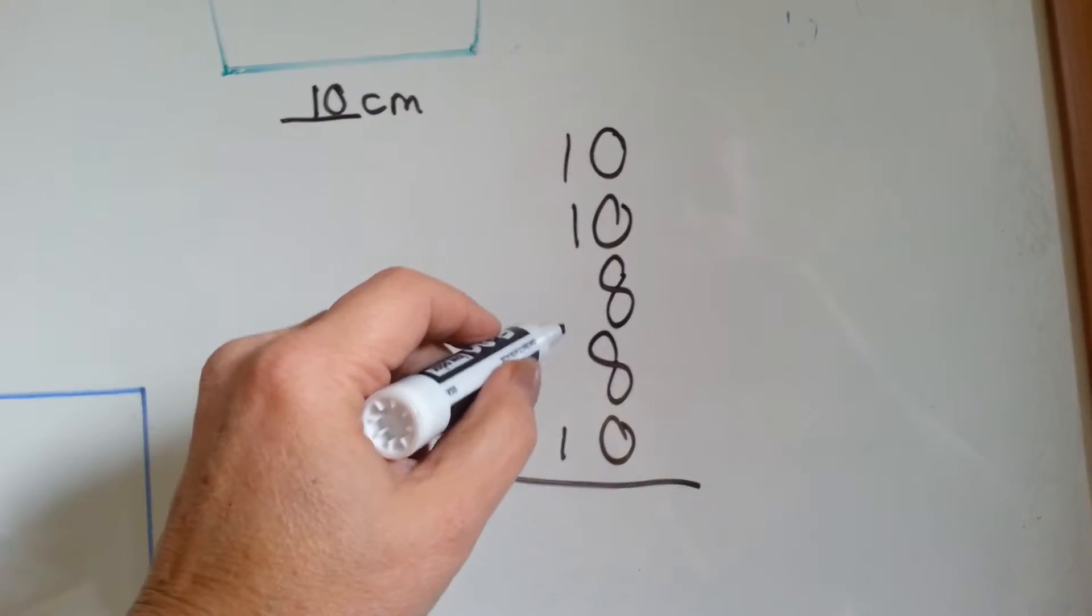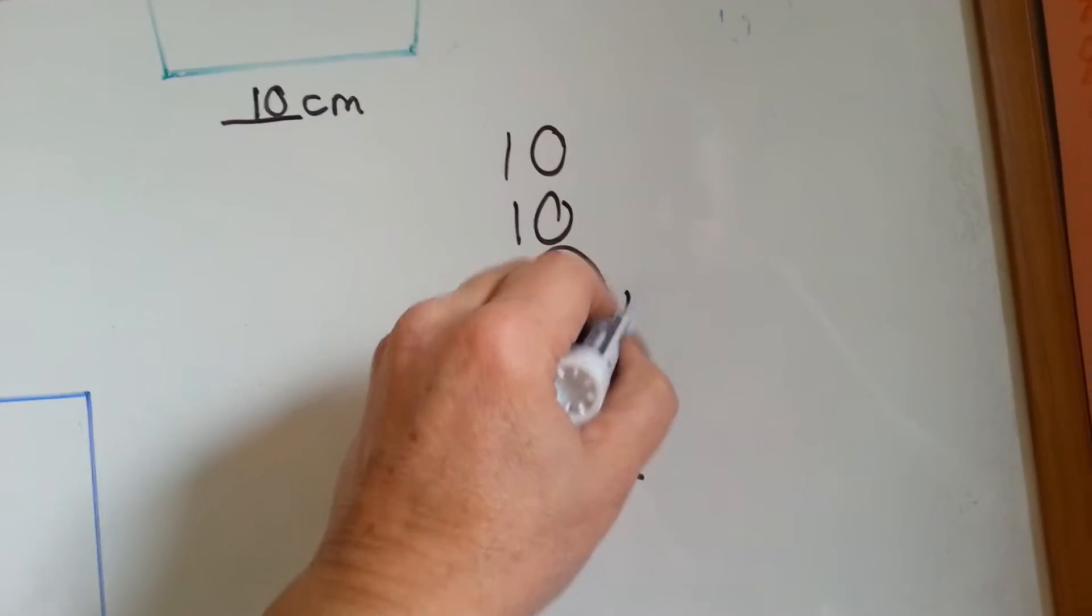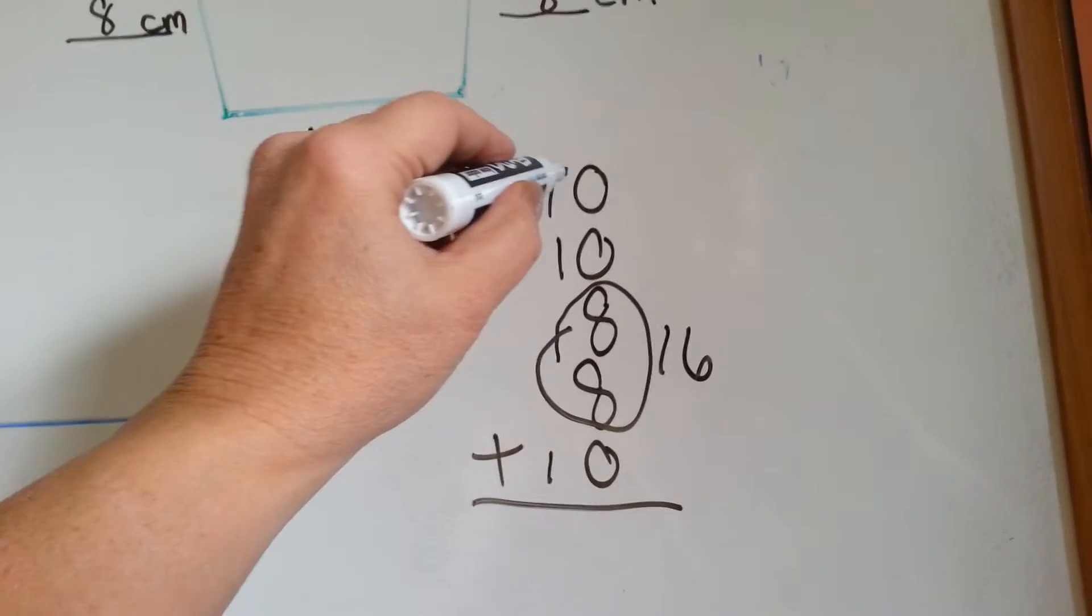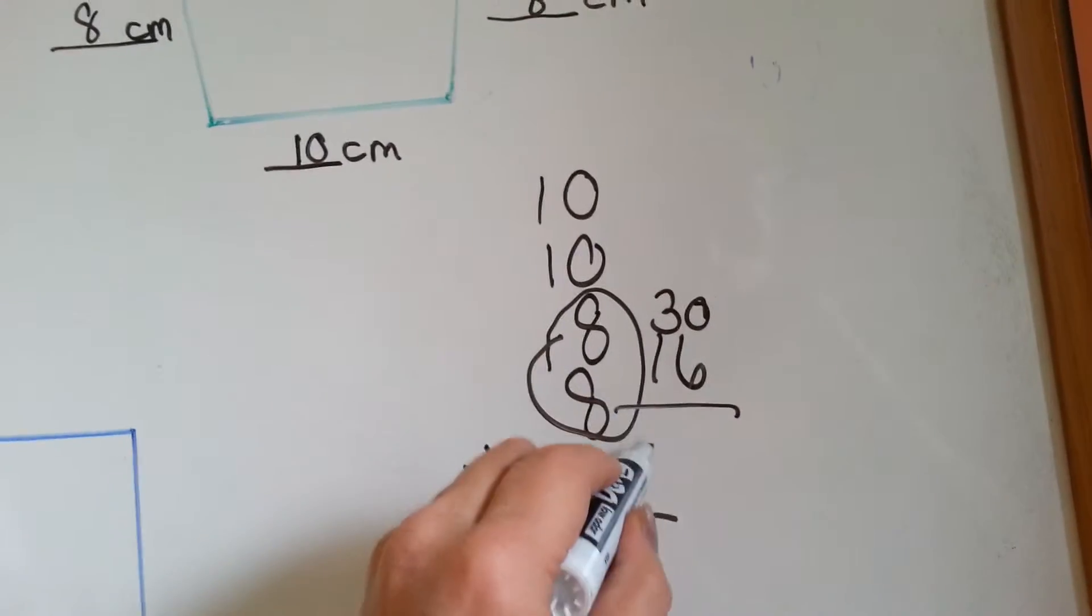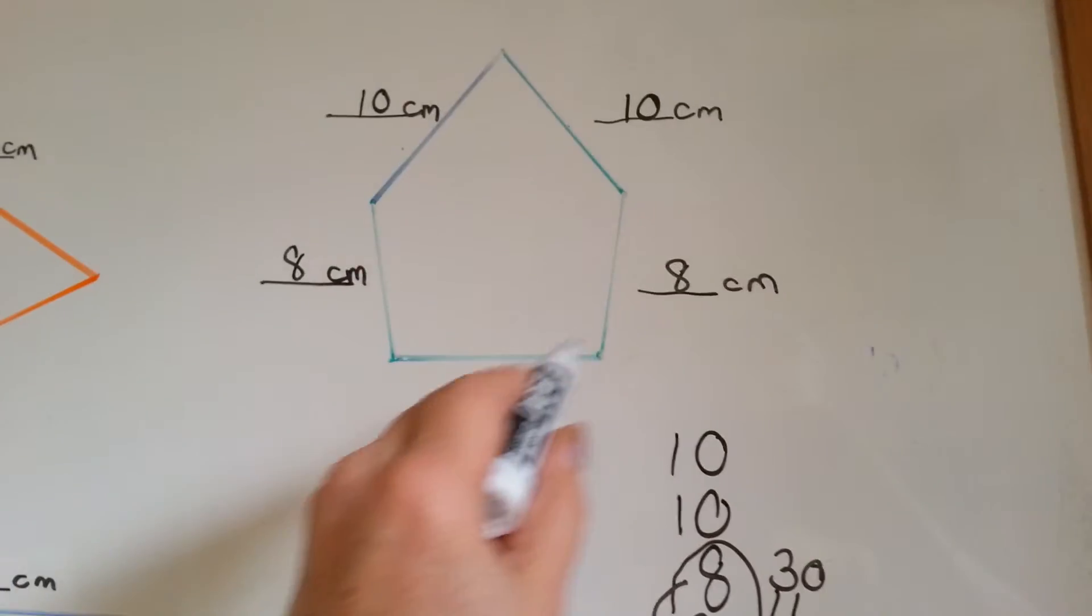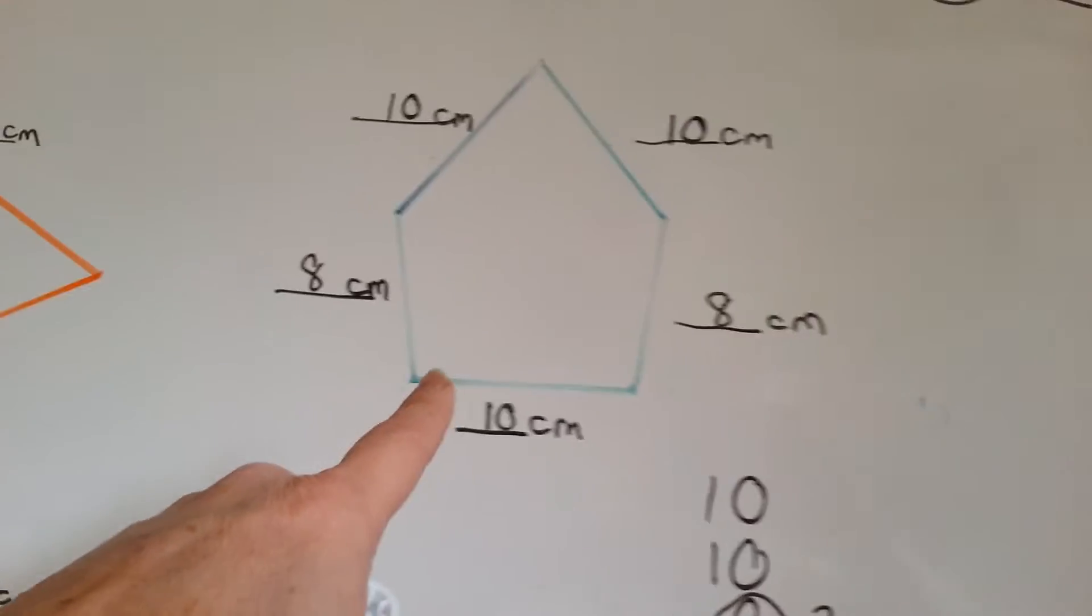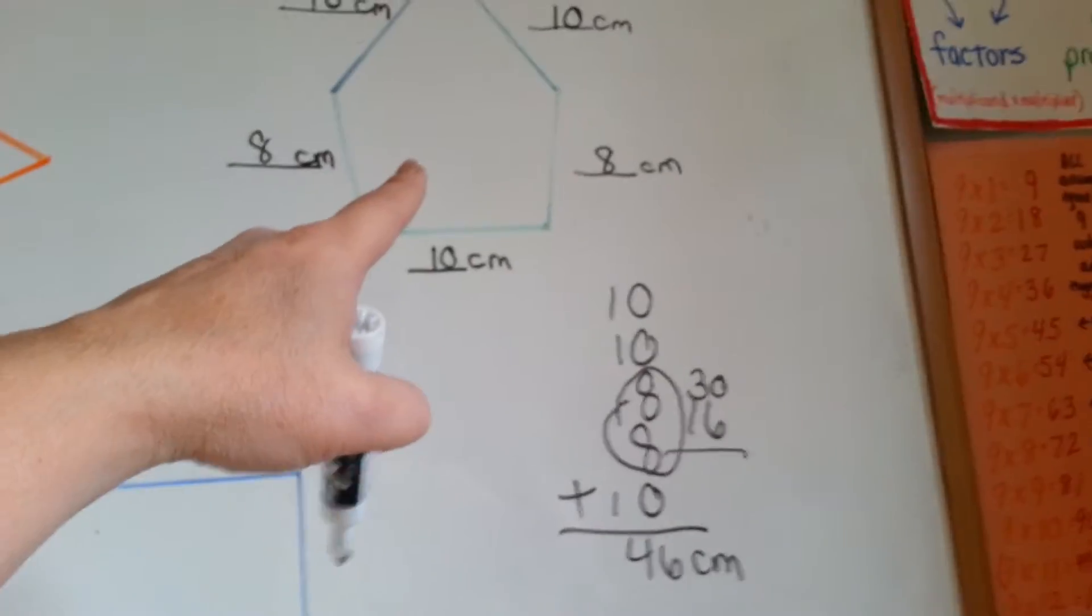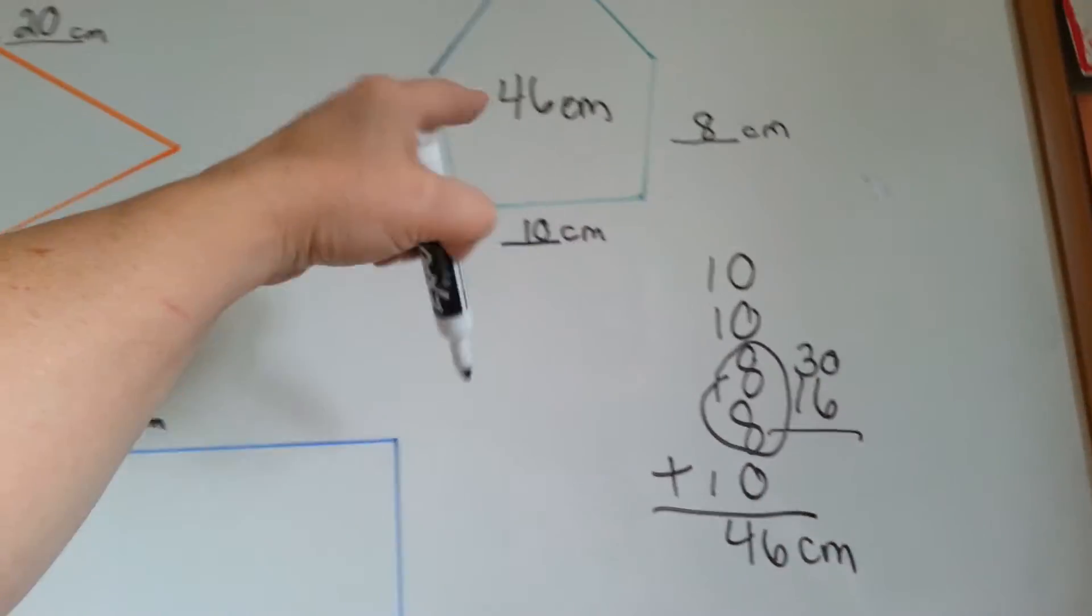Let's add like numbers. 8 and 8 is 16, and then we have 10, 20, 30. 30 and 16 is 46. So because we're doing centimeters, it would be 46 cm, and the perimeter of this shape would be 46 cm. That's its perimeter.